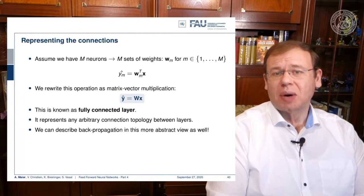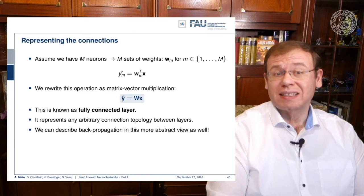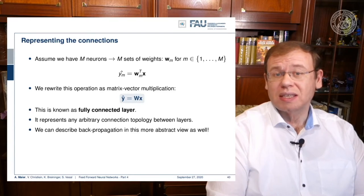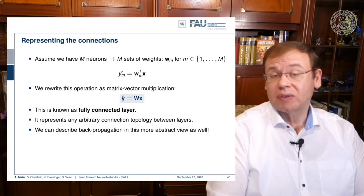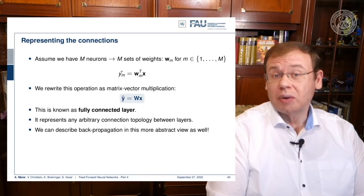Now think about the case where we have m neurons, giving us y-hat index m. All of them are inner products. If you bring this into vector notation, you can see that the vector y-hat is nothing else than a matrix multiplication of x with matrix W. A fully connected layer is nothing else than a matrix multiplication, and we can represent arbitrary connections and topologies using it.